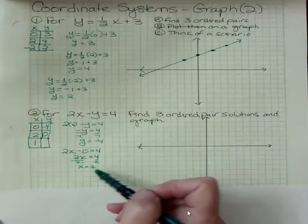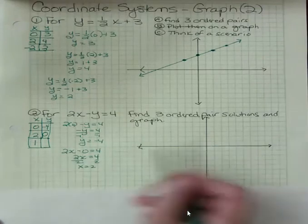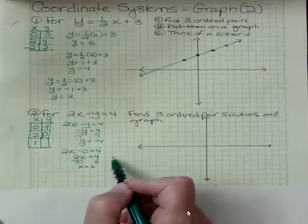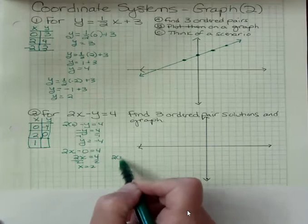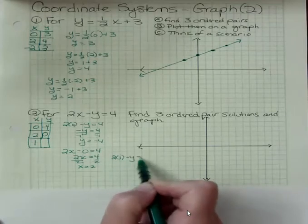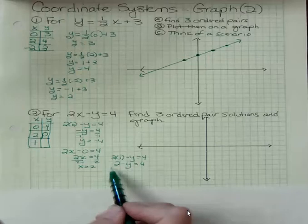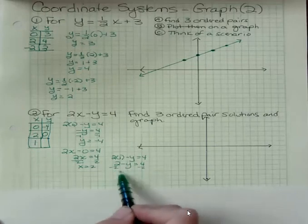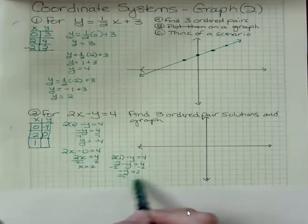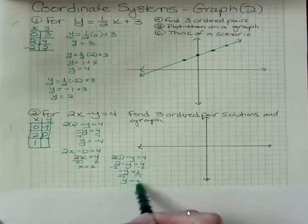And then my third point, I said what if X was one? So I'm going to do two times one minus Y is four. Two minus Y is four. I'm going to subtract two from both sides. Negative Y is two and Y is negative two.